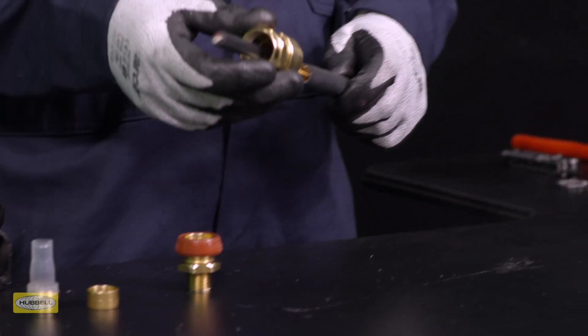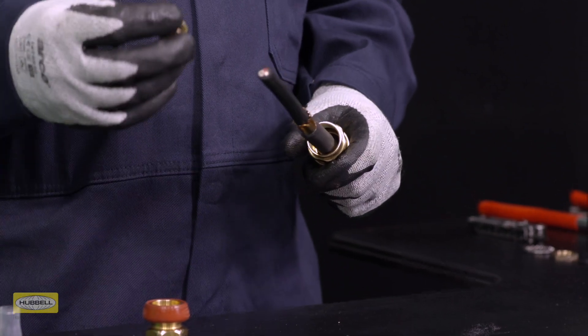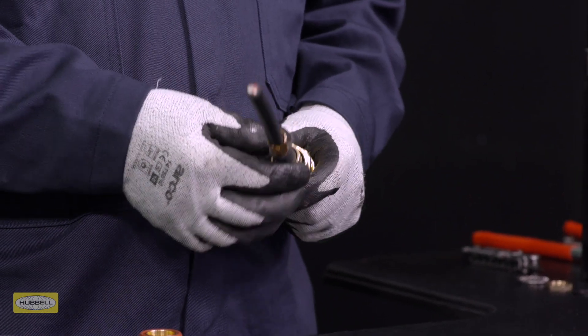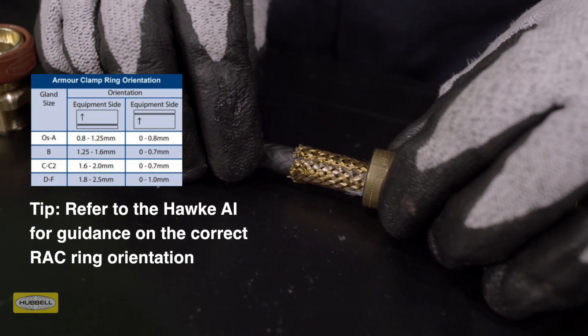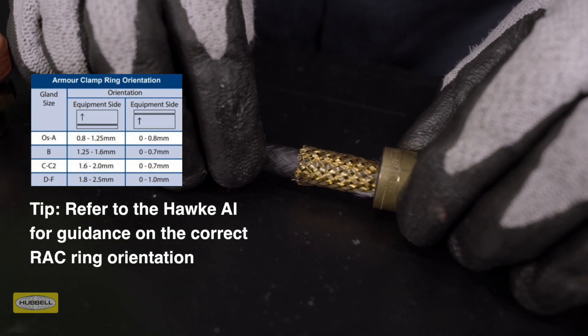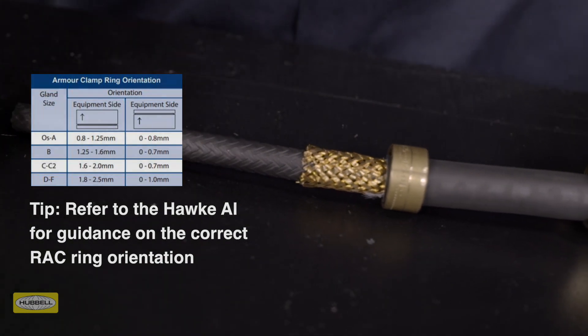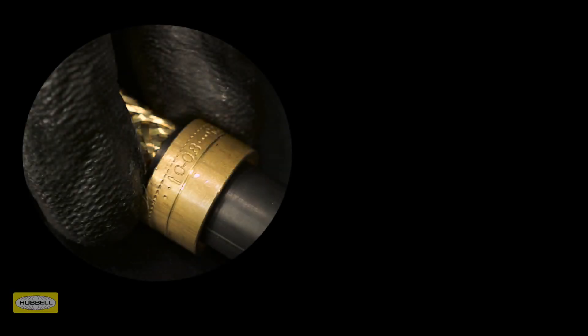Slide the back nut, middle nut, and armor clamping ring onto the cable. Ensure that the orientation of the reversible armor clamping ring is correct, with the arrowhead indicating the correct armor, braid, or tape pointing to the equipment. Always refer to the HAWK assembly instructions for guidance on the correct armor clamp ring orientation.